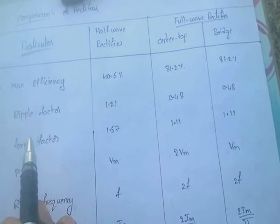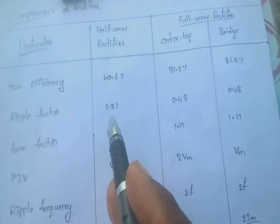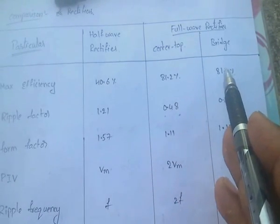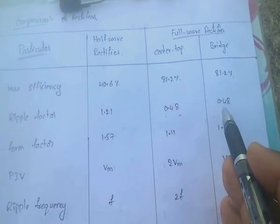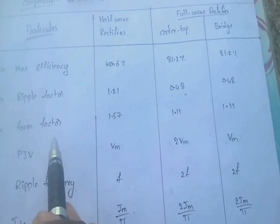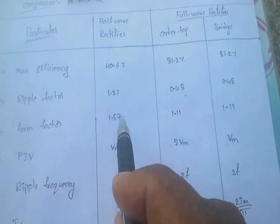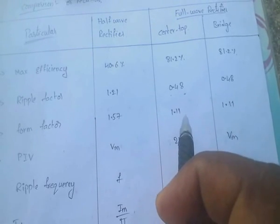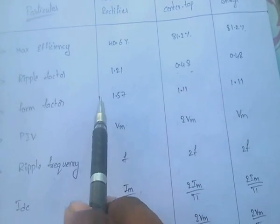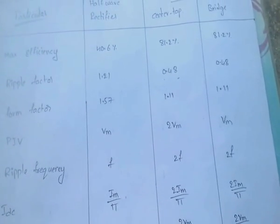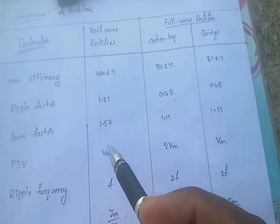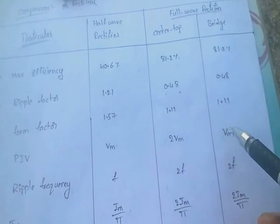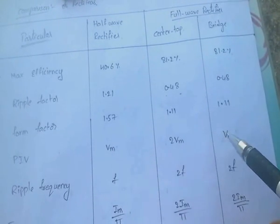For ripple factor: half wave rectifier is 1.21; full wave rectifier (both center tap and bridge) is 0.48. For form factor: half wave rectifier is 1.57; full wave rectifier is 1.21 for both center tap and bridge. For peak inverse voltage: half wave rectifier is V_max; center tap full wave is 2V_m; bridge rectifier is V_m.